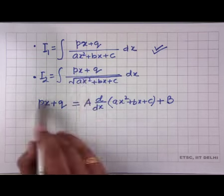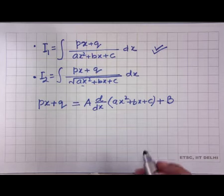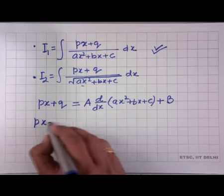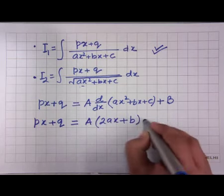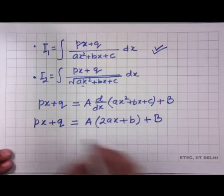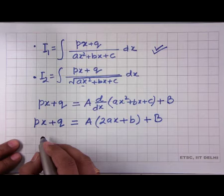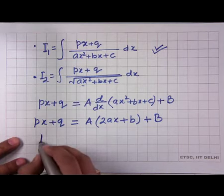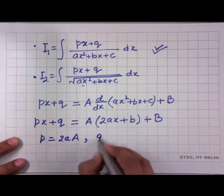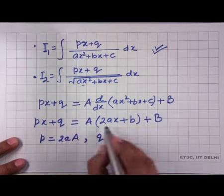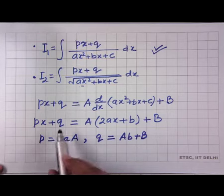So: px+q = A·d/dx(ax²+bx+c) + B = A·(2ax+b) + B. Comparing coefficients: p = 2aA (coefficient of x) and q = AB + B (constant term). We have two equations in two unknowns A and B. From the first equation, A = p/(2a). Substituting into the second equation gives B, so both constants can be determined.